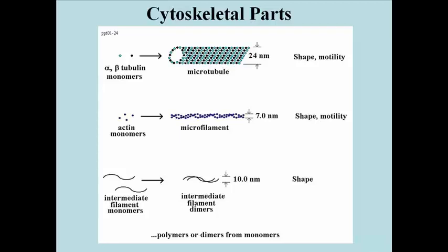Microfilaments are made up largely of polymerized actin polypeptides. At 7 nanometers in diameter, these thin filaments are the smallest component of the cytoskeleton.